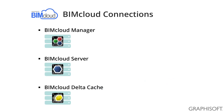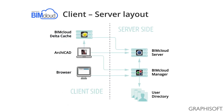The connections between the BIMcloud components are the following. On the left-hand side is the client side, where the browser, cache and ARCHICAD are located. On the right-hand side are the servers, which manage all the communication toward the client side. These are the BIMcloud Server, the BIMcloud Manager, and the user directory that the BIMcloud Manager connects to.